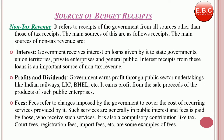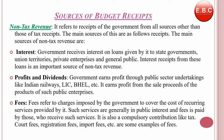Another part of revenue receipts is non-tax revenue. It refers to receipts of the government from all sources other than tax receipts. The main sources are: first, interest — the government receives interest on loans given by it to state governments, union territories, private enterprises and the general public. Second, profit and dividends — the government earns profit through public sector enterprises like Indian Railways, LIC, BSNL, ONGC, etc., from the sales proceeds of the products of such public enterprises.